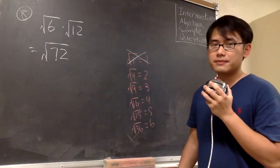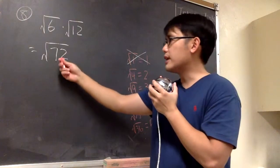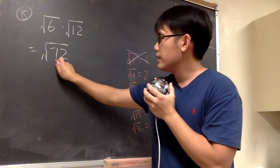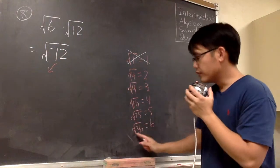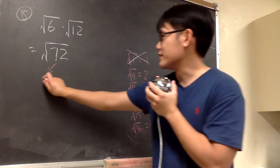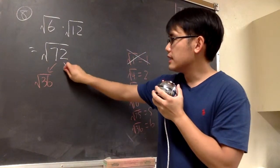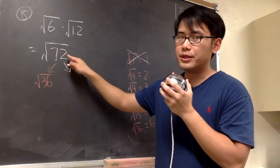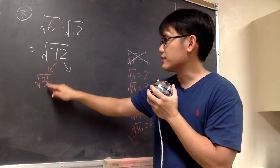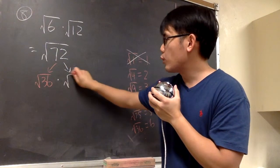So to do that, square root of 72 is going to be - let's put the perfect square first, which is the square root of 36. And then, because 36 times 2 will be 72, we just maintain the square root of 36 times square root of 2.